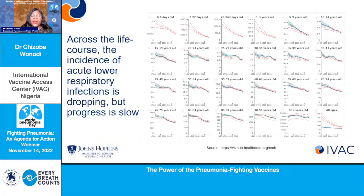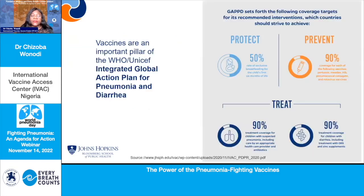We have to look beyond the childhood age group and start talking about the life course, because across the life course, pneumonia is a threat to health. Data from healthdata.org at the University of Washington shows the good news: pneumonia death incidence has been declining in all age groups. However, the pace of decline is not as fast as we want it to be. The WHO and UNICEF's Integrated Global Action Plan for Pneumonia and Diarrhea identifies vaccines as one of the critical pillars to address pneumonia.